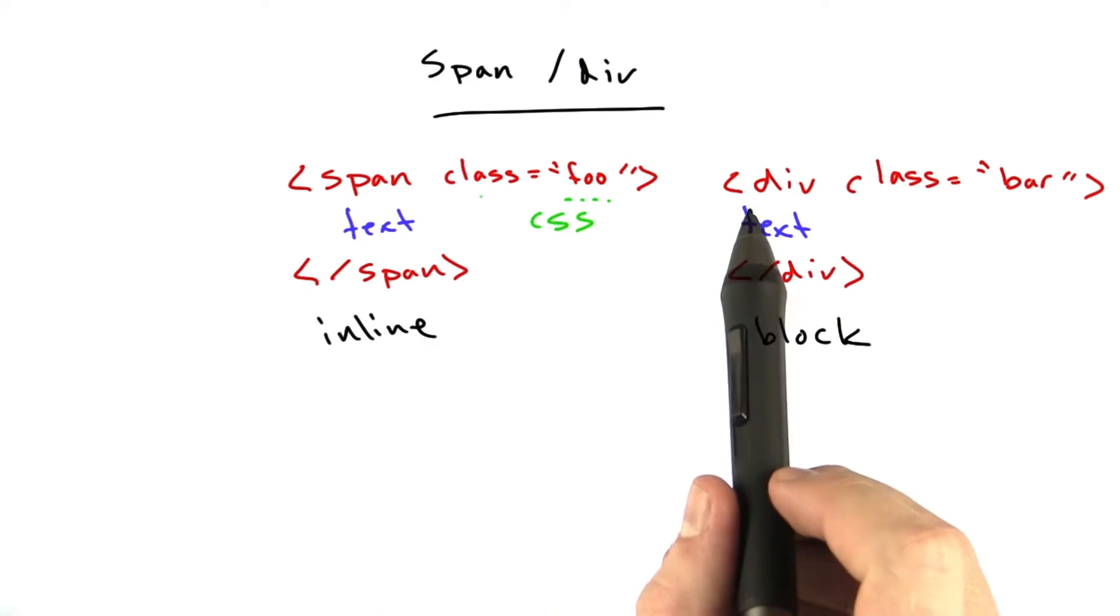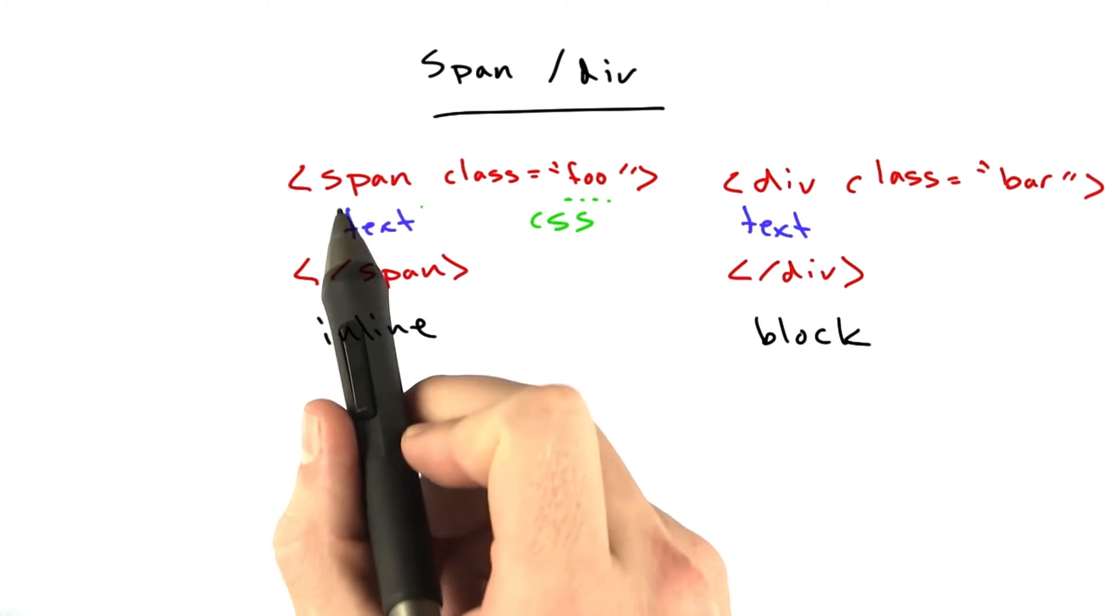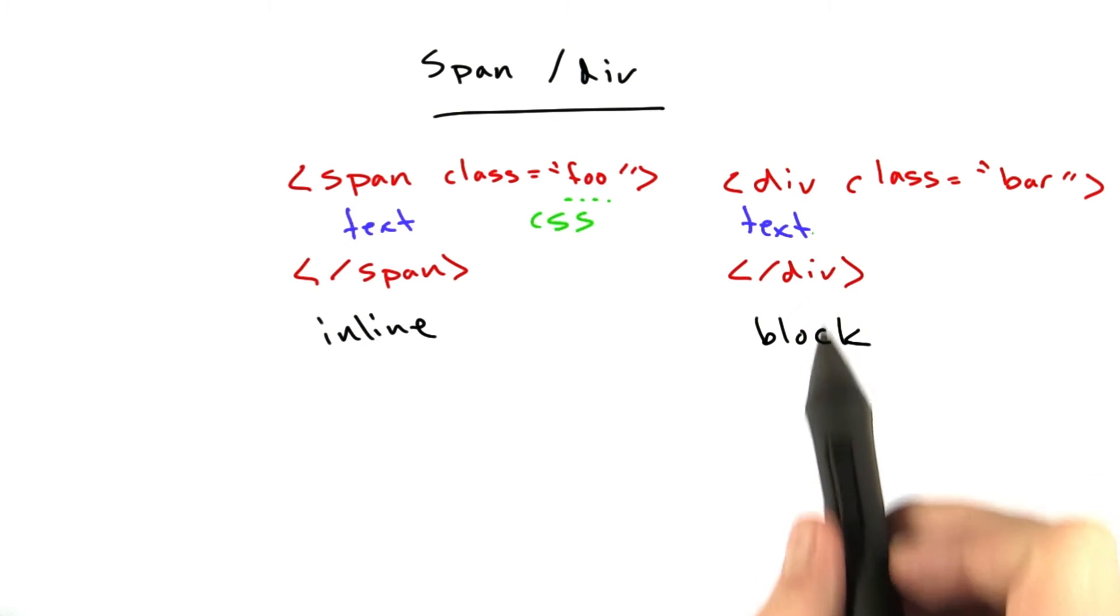And we'll be using spans and divs a lot for controlling how text is laid out. But the important thing to remember is that spans are inline and divs are block.